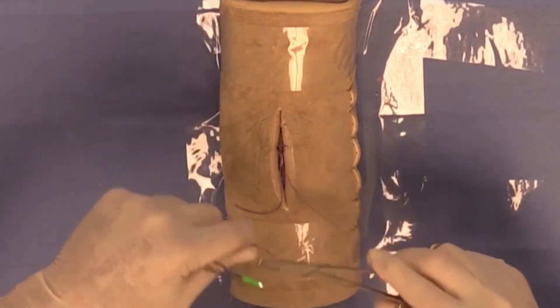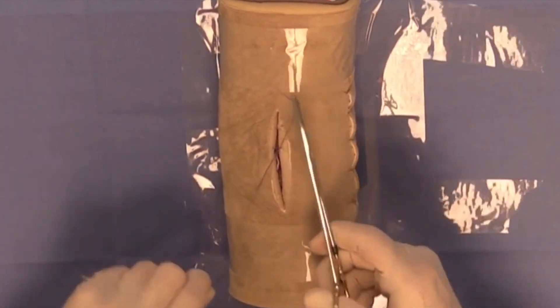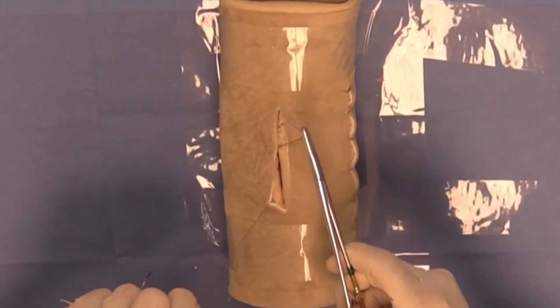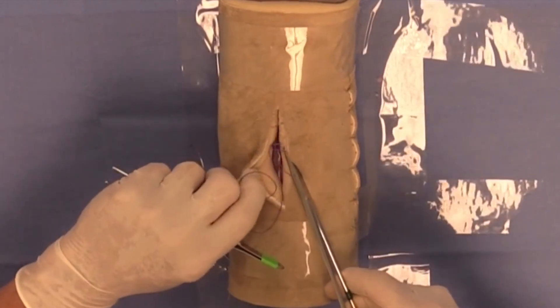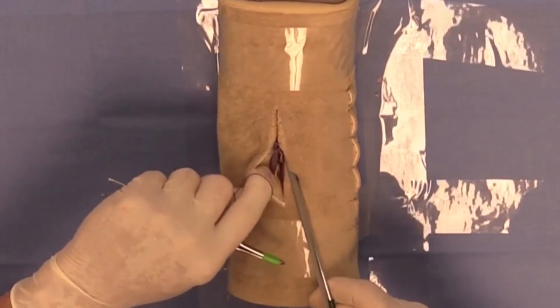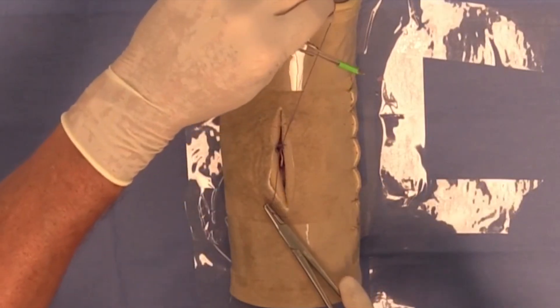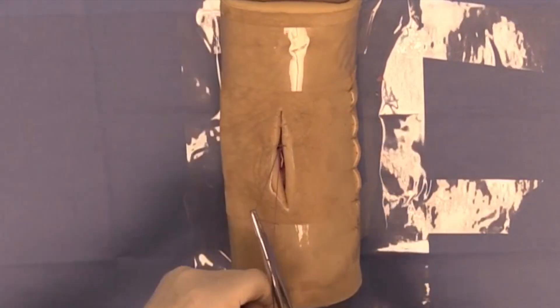For demonstration purposes, I'll use a surgeon's throw and purposely tie it tight so you can actually see where the knot is, followed by a simple throw.